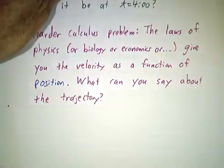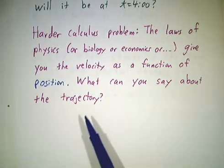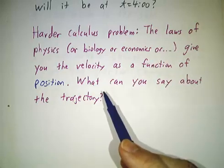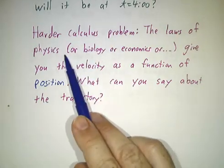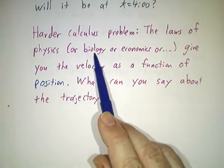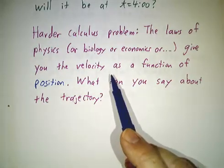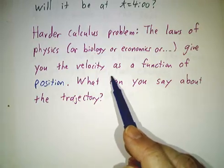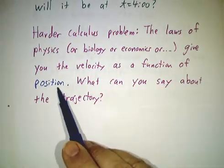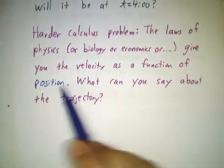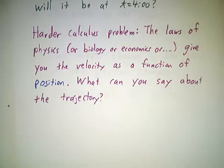An even harder calculus problem is where somebody gives you not the velocity as a function of time, but the velocity as a function of position. This may sound unrealistic, but there are plenty of situations in biology or economics where the rate of change of some quantity is directly related to what that quantity is. So in this case, velocity, the rate of change of position, is some function of position. And if you have an equation like that, we call it a rate equation, what can you say about the resulting trajectory?